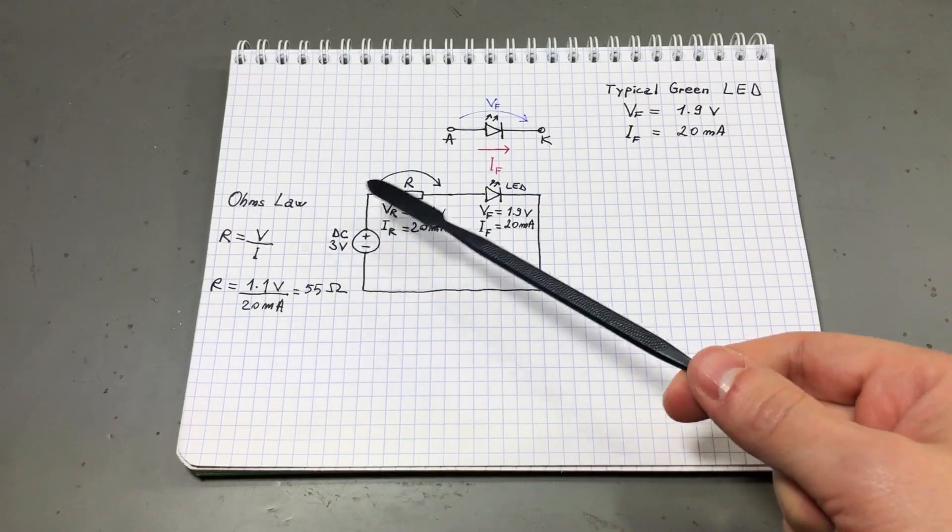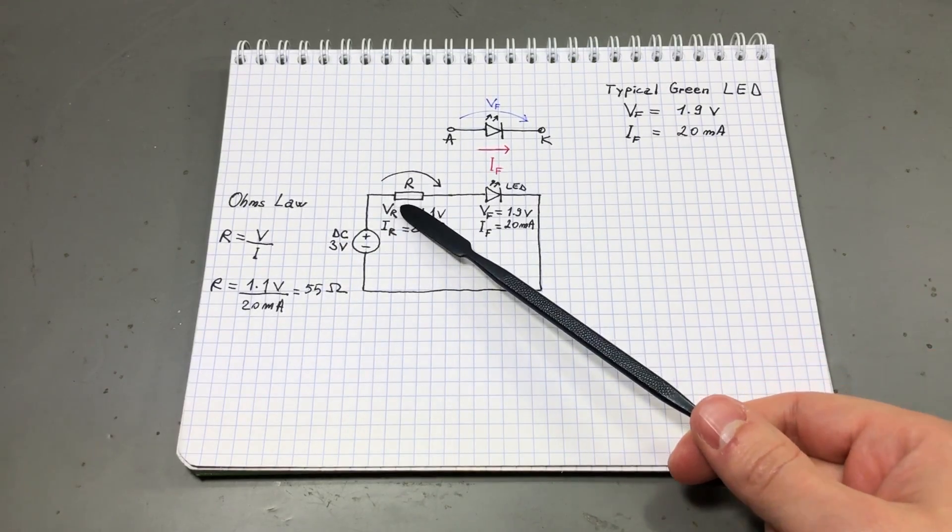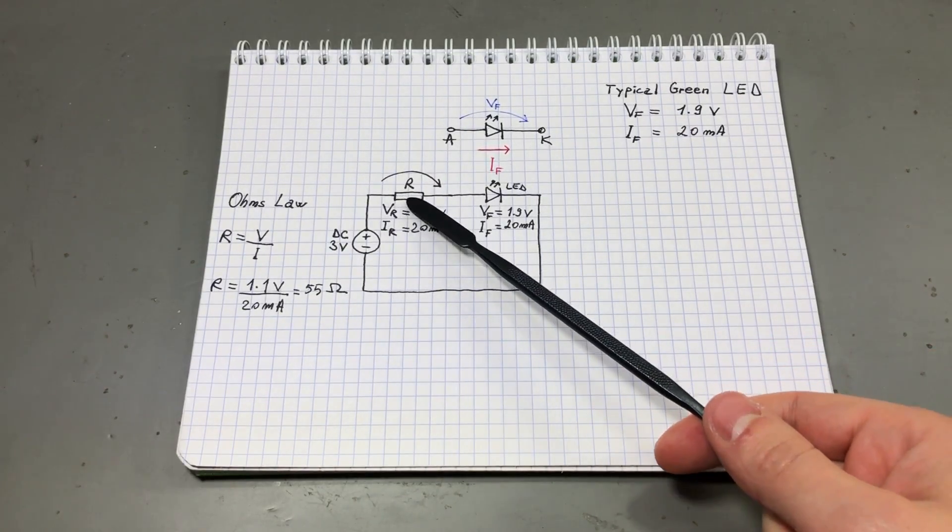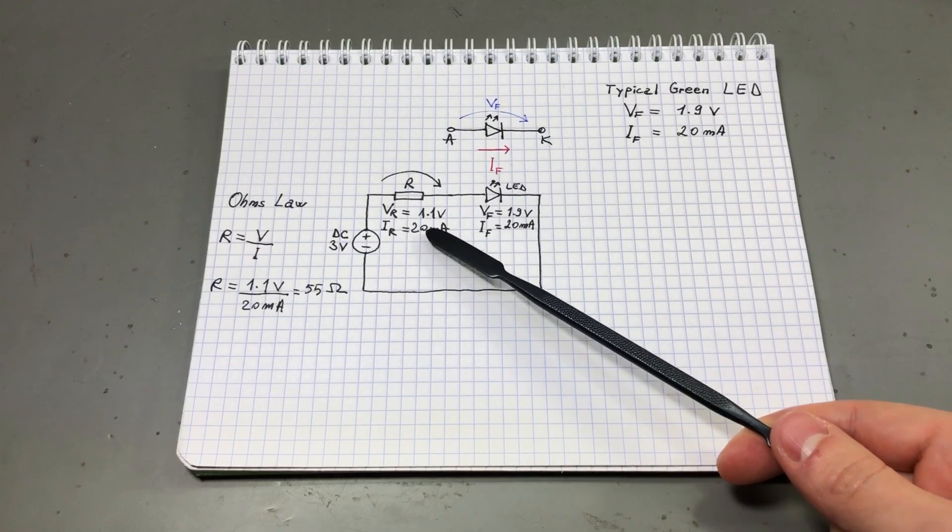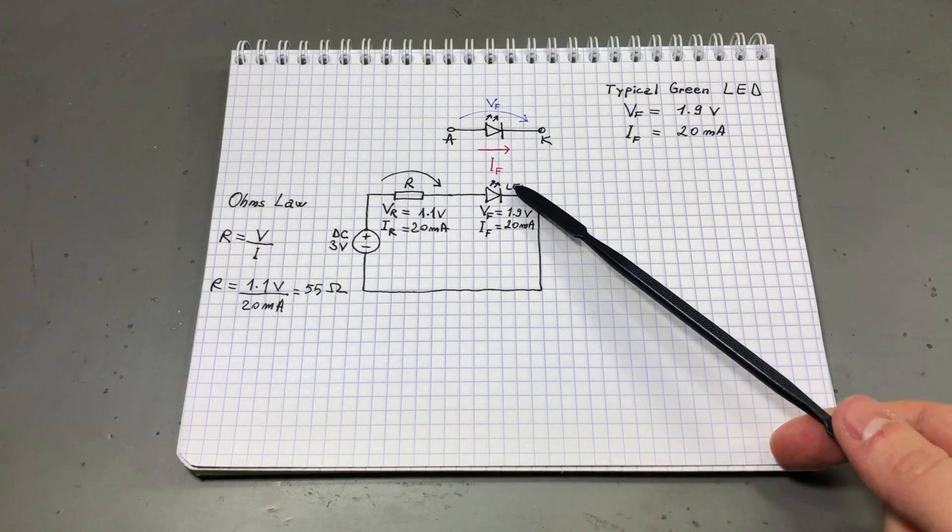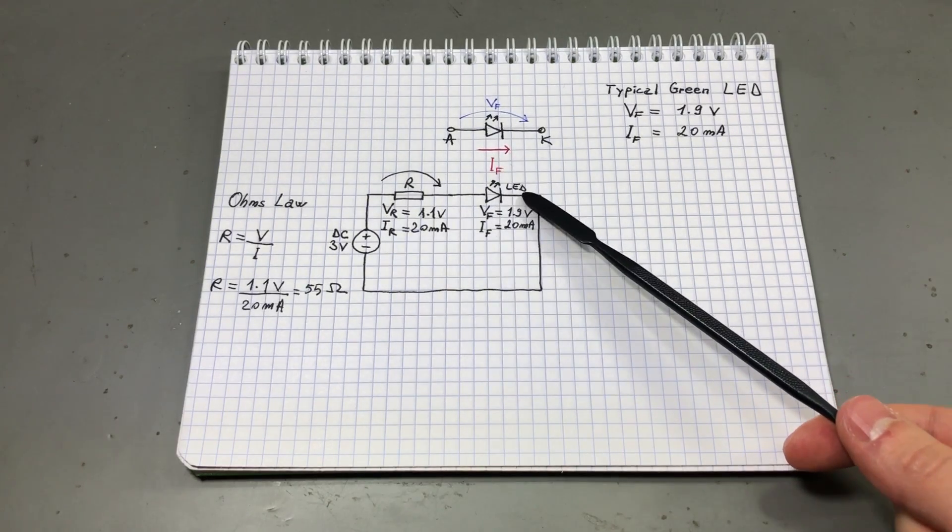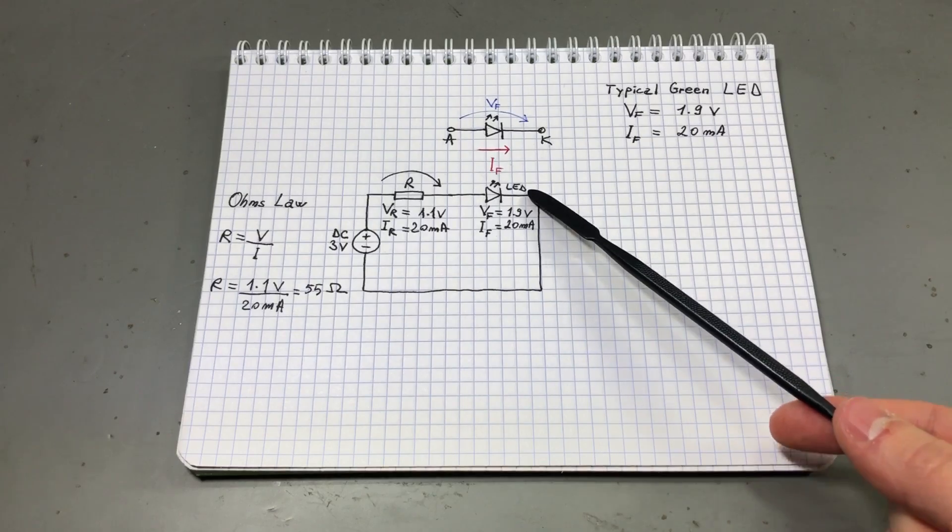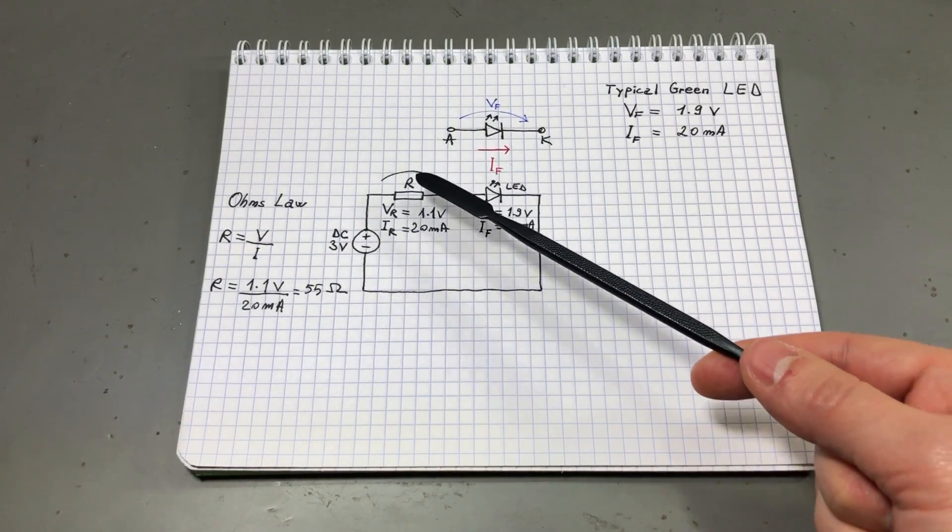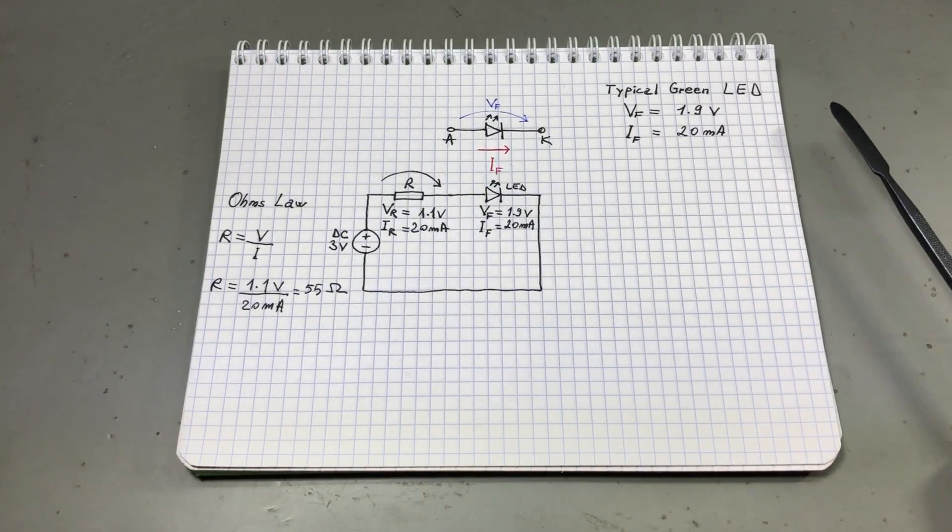In our case the voltage drop on our resistor is 1.1 volts divided by 20 milliamps will result in a 55 ohm resistor. So using a 55 ohm resistor in our circuit will limit the current to just 20 milliamps for our LED. It will light at its maximum brightness and it will not go over 20 milliamps because the current is limited by the resistor.